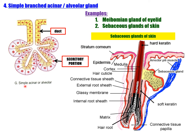Simple branched acinar or alveolar gland: duct is present, secretory portion is acinar or alveolar type. Examples: Meibomian gland of the eyelid and sebaceous gland of the skin. The sebaceous gland is associated with the erector pili muscle, the hair follicle shaft, and is surrounded by stratified non-keratinized or keratinized epithelium.